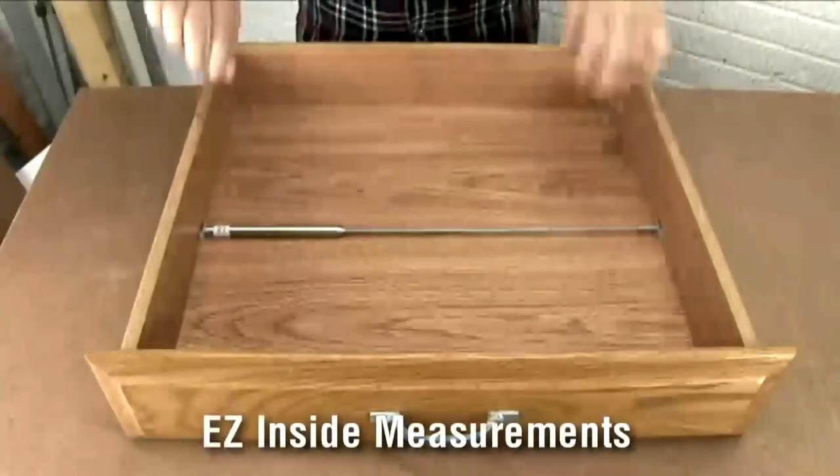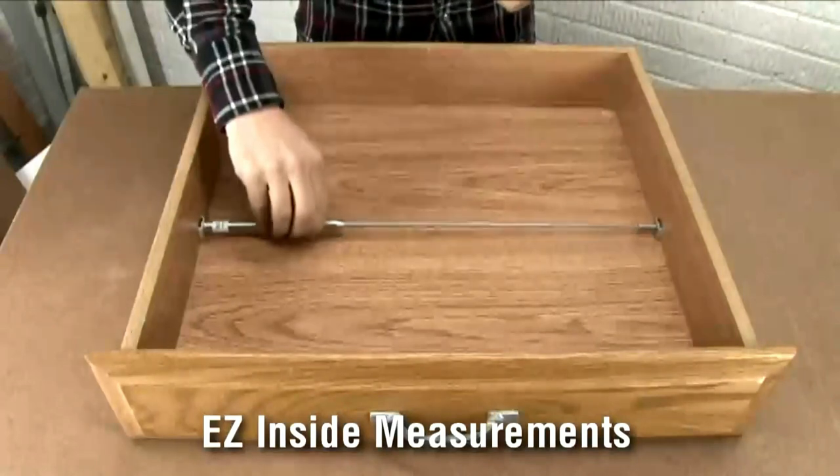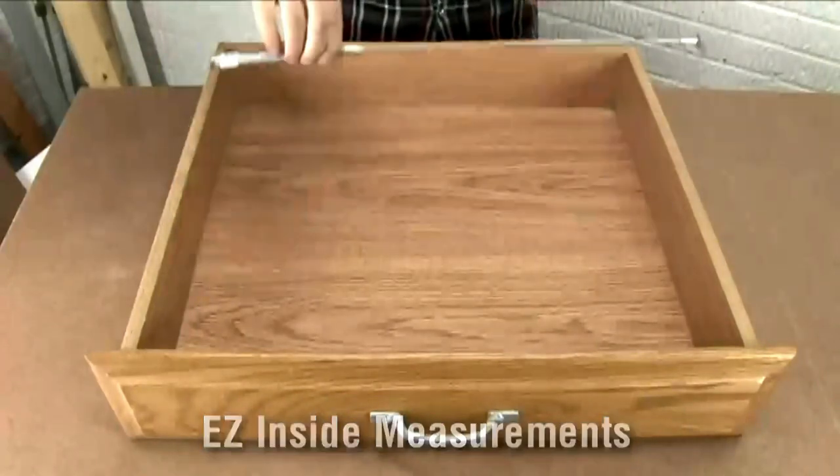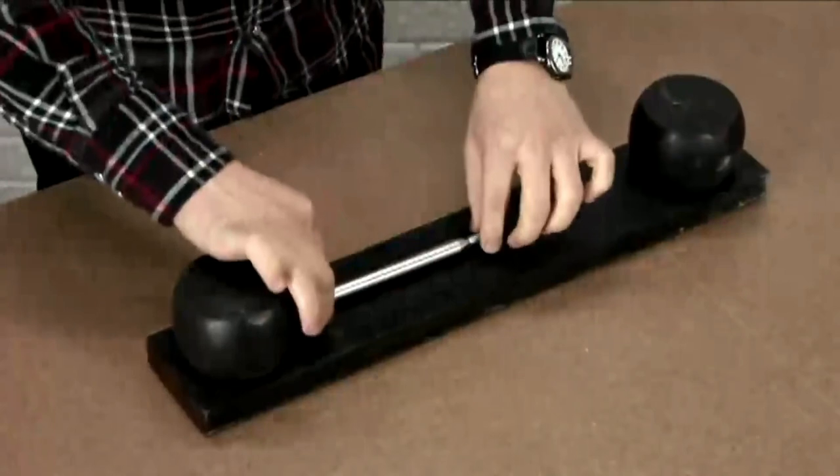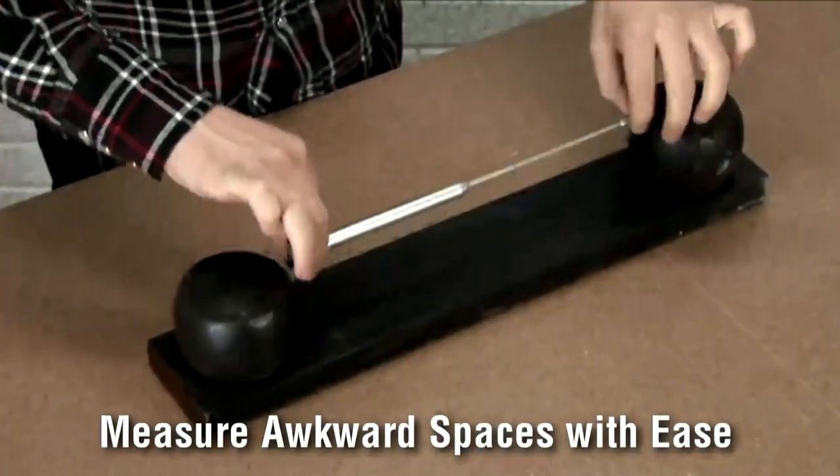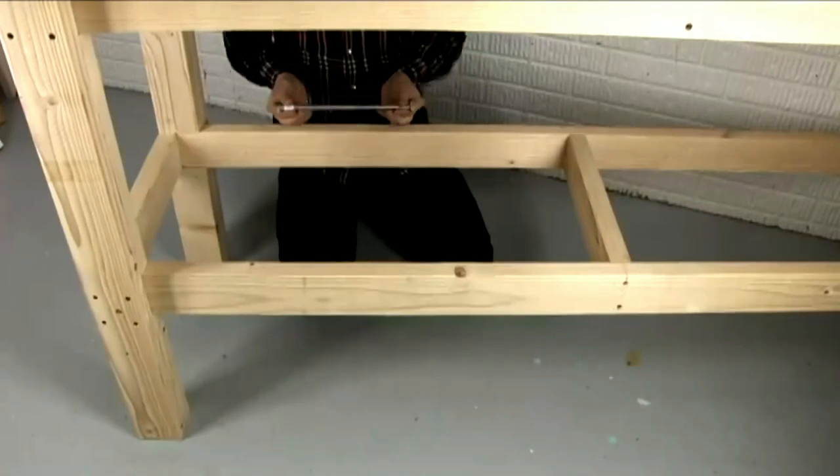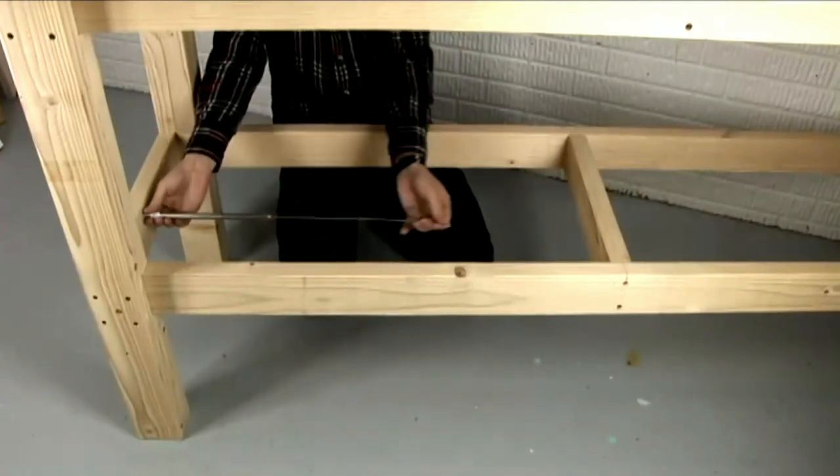The large Easy Measure Stick captures measurements from 7 inches to 45 inches. The mini Measure Stick captures measurements from 3 inches to 8 inches. Then it's simply a matter of copying the measurement to the board you want to cut.